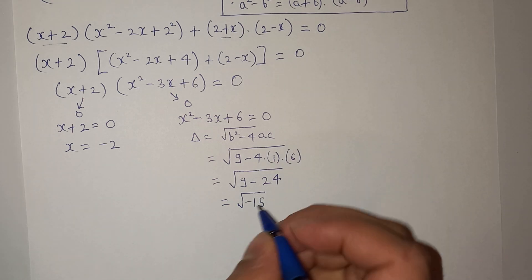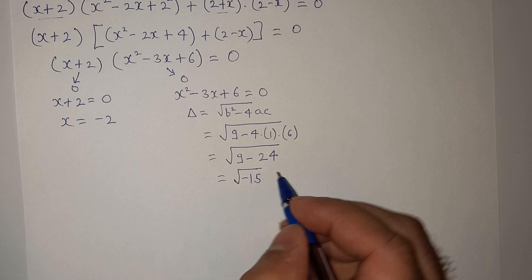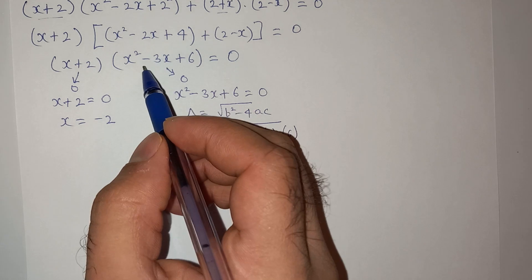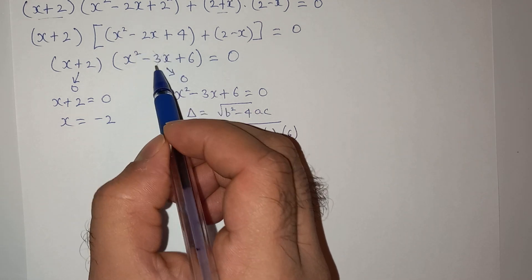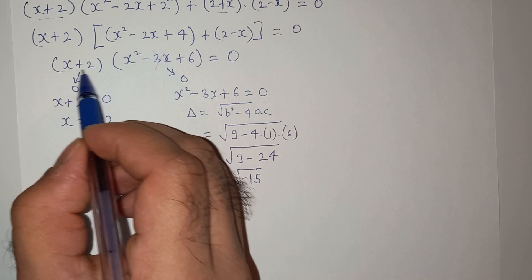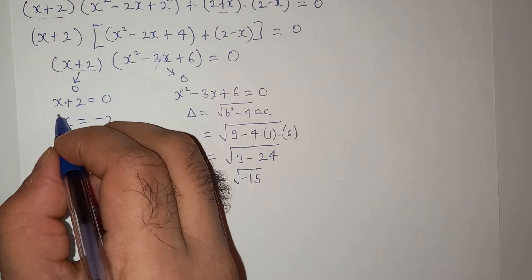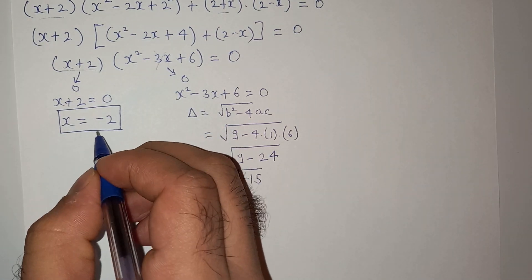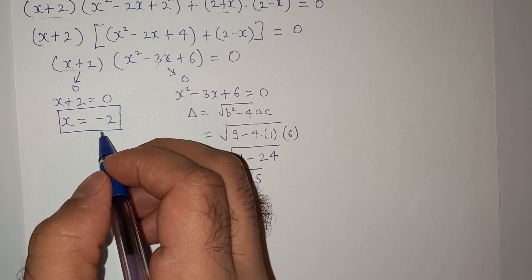So there's no real solution. So we are going to reject this term and we are only going to consider this term. So the value of x is x equals to minus 2. This is the only solution and the only answer.